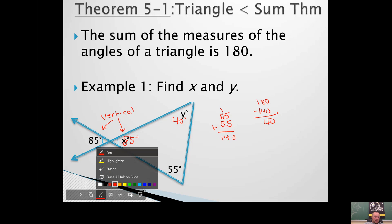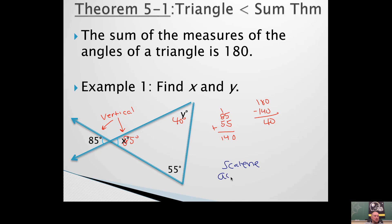Now, if you want to go a step further, you can definitely classify this triangle. Notice how all the angles are different. And notice how they're all less than 90. So that's a little review from what we did last section.